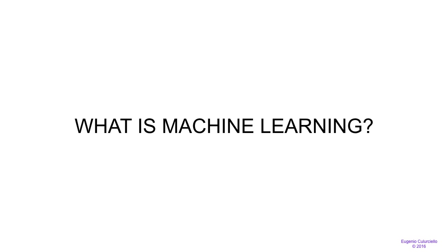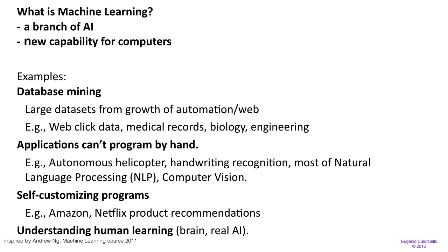But let's start with machine learning. What is machine learning? This is at the core of all these applications and also deep learning. Machine learning is a branch of AI — it gives a new capability for computers. Computers were traditionally extremely good at interpreting and doing calculations, but they were not so good at other tasks like interpreting the content of an image, the content of a video, understanding speech, audio, and so forth. So we want to give these new capabilities to computers.